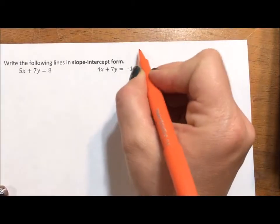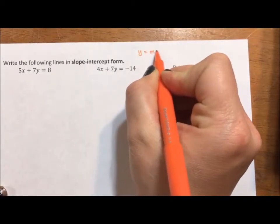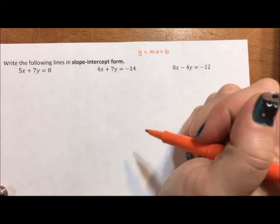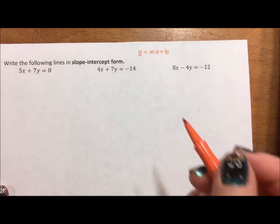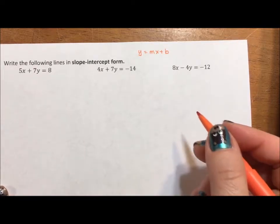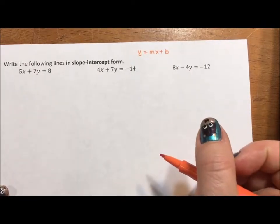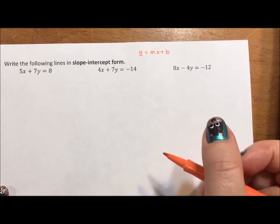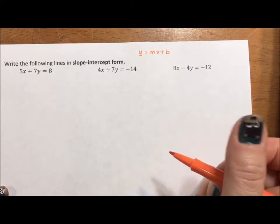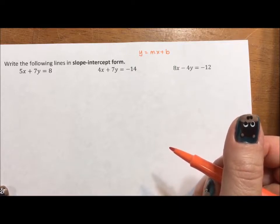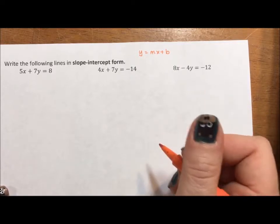Slope-intercept form is y equals mx plus b. It's our favorite form because it is the only one that is unique. Every other form has multiple ways of writing it, and that's why you always have to do everything in slope-intercept form. If I have to write 115 tests, I want to make sure I don't have 115 different versions of the same line, and slope-intercept is the way to do it.